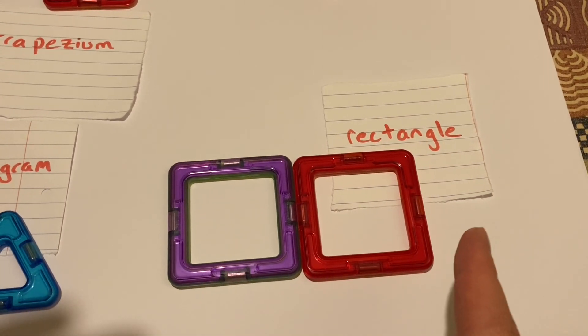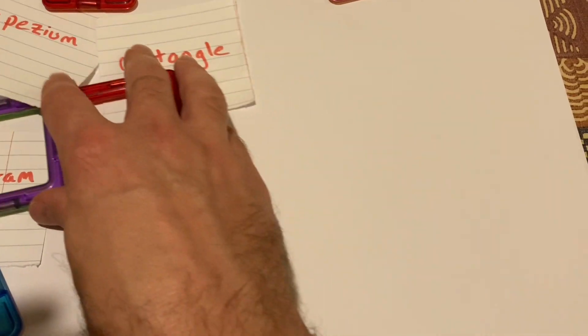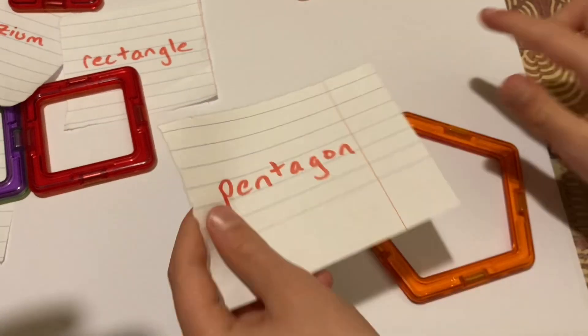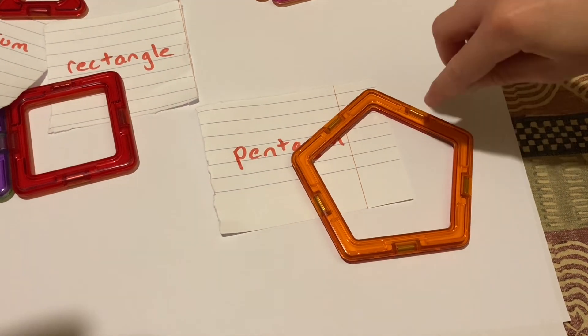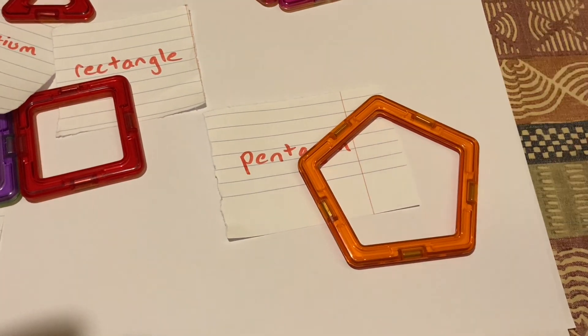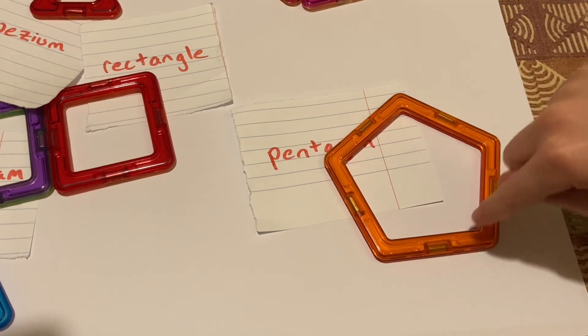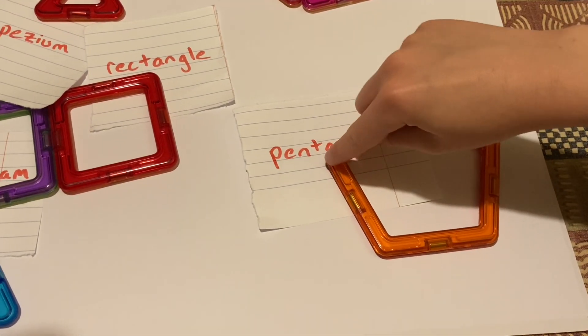We've got one other shape that hasn't been seen yet. What's that? That is a pentagon. And how many sides has that got? That has got five sides. One, two, three, four, five. Excellent. And five vertices. Yeah, the vertices are the corners.